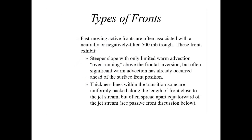Fast-moving active fronts are often associated with a neutral or negatively tilted 500 millibar trough. A negative tilt in a trough is one oriented more northwest to southeast. So we have more of a perpendicular wind component of the mid- and upper-level winds. If you have a more perpendicular wind component or 90-degree orientation to the surface front, it's going to push that front through much quicker. Thickness lines with a fast-moving active front within the transition zone are more uniformly packed along the length of the front close to the jet stream, spread further apart equatorward.